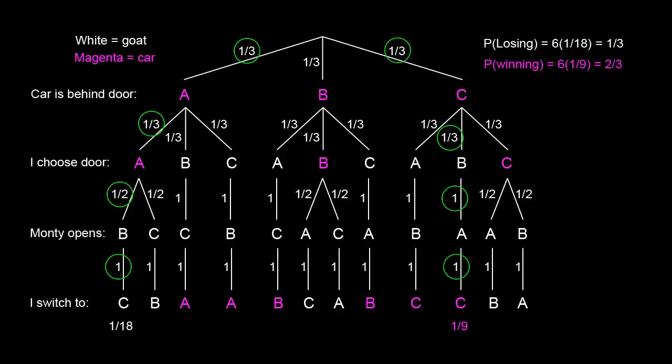Each winning path has a probability of one-third times one-third times one times one, which equals one-ninth. Since there are six winning paths, the total probability of winning is six times one-ninth, which equals two-thirds.